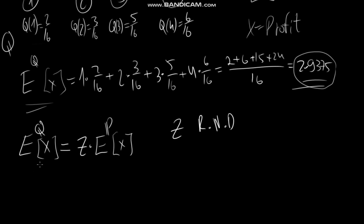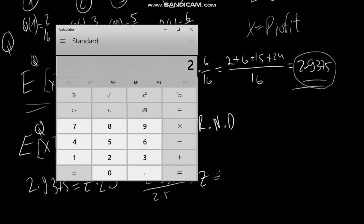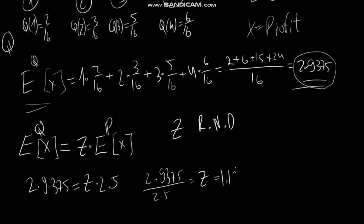Let's see how it works. We know that the expected profit under Q is 2.9375, and we want it to be equal to something times the expectation under P. So we can see that 2.9375, if we divide it by 2.5, we get Z. 2.9375 divided by 2.5 gives us 1.175.